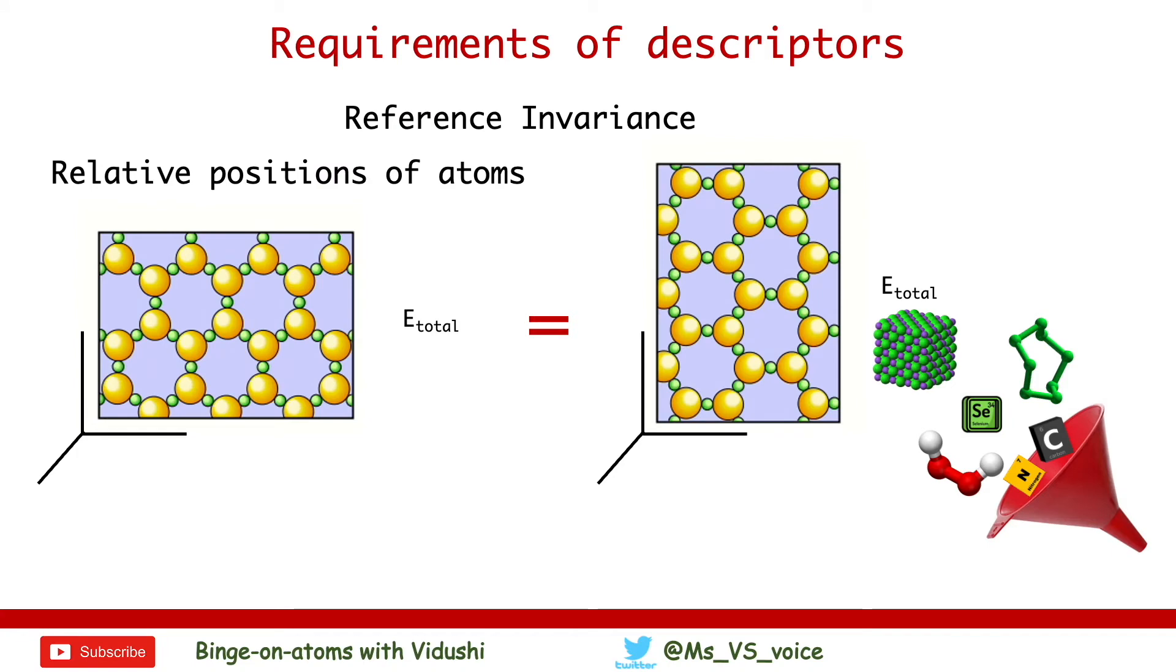Descriptors need to have reference invariance. The predicted property of the material should be invariant to the trans-rotational transformation of the system coordinates.